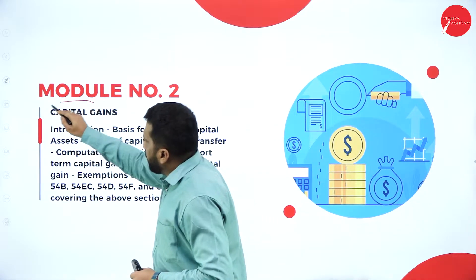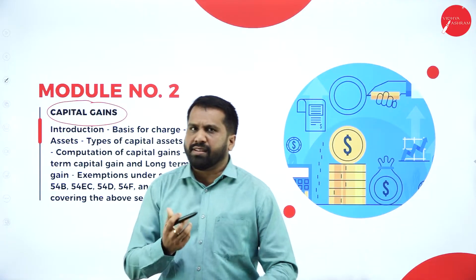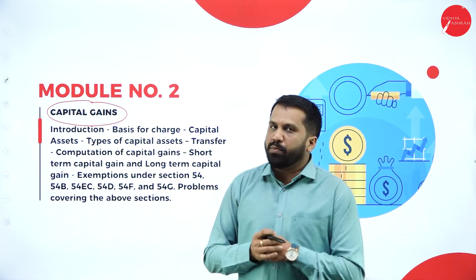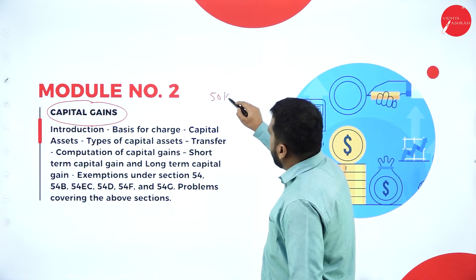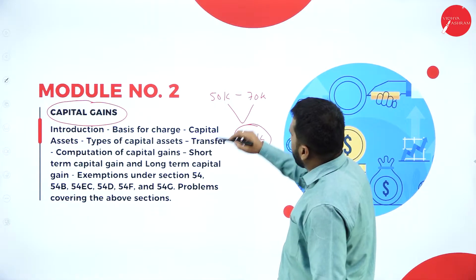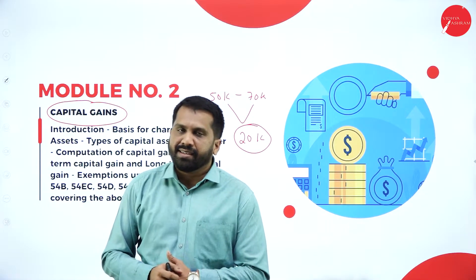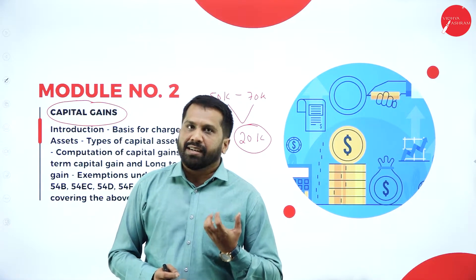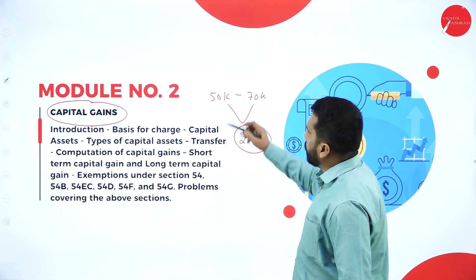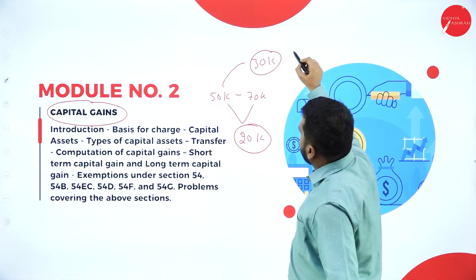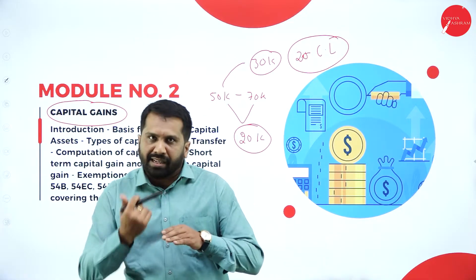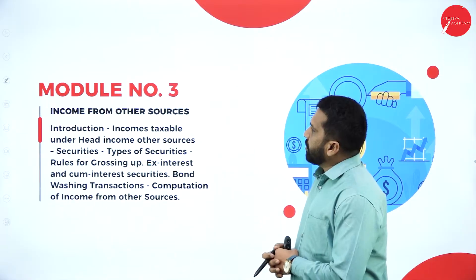The second topic is capital gain. Gain means income or profit earned. For example, you bought jewelry for 50,000 and sold the same jewelry for 70,000 — the profit of 20,000 is called capital gain. Any asset sold at a profit is capital gain. If you sell that jewelry for 30,000 instead, that is capital loss.